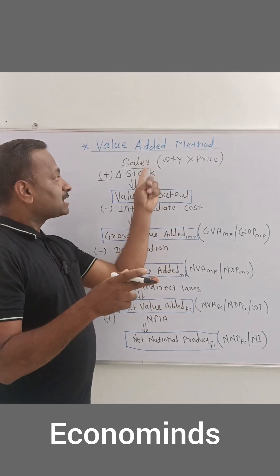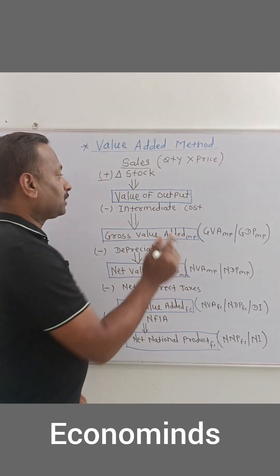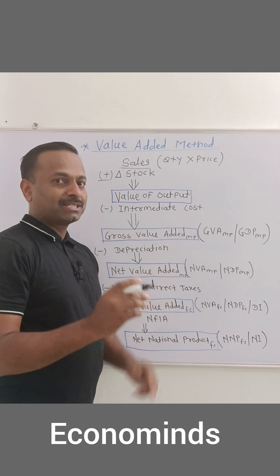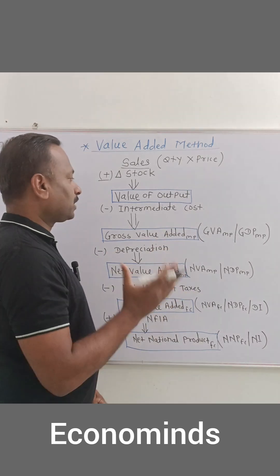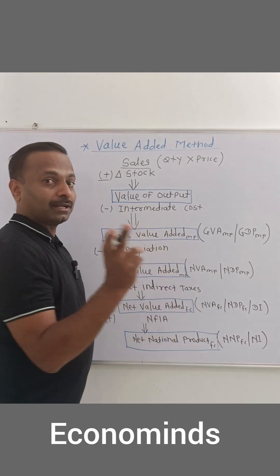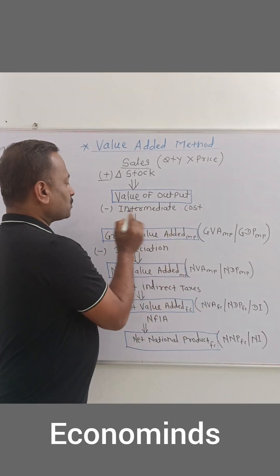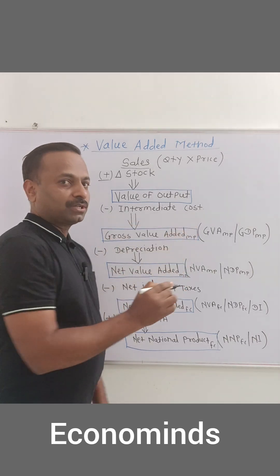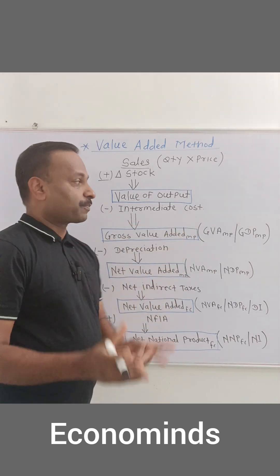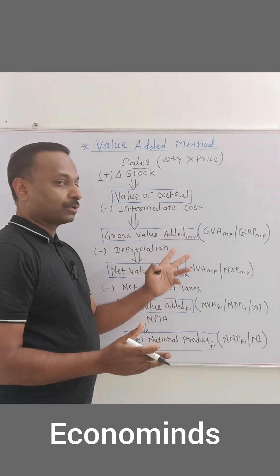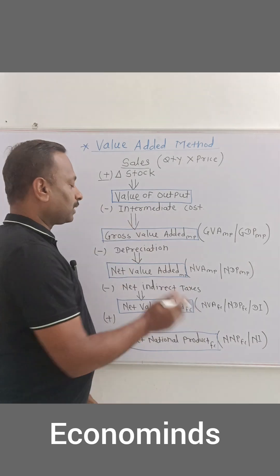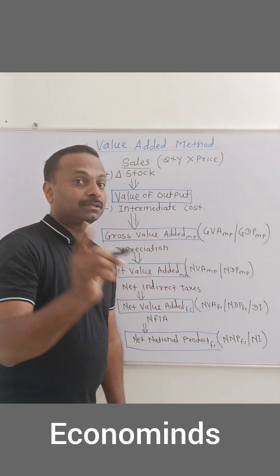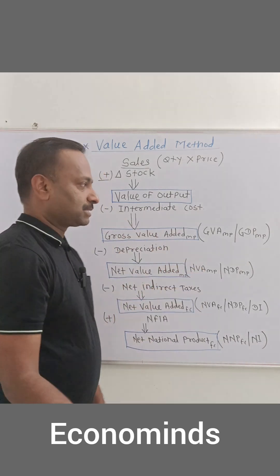Sales plus change in stock will give you the value of output. After getting the value of output, we have to subtract intermediate cost — that is the cost of production — from the value of output.